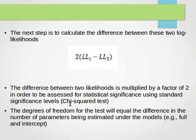That's in order to be assessed for statistical significance using the standard significance levels, maybe the chi-squared test again. In my tutorial, Data Exploration and Analysis, in there I explained how the chi-squared test works. The degrees of freedom for the test will equal the difference in the number of parameters being estimated under the models, maybe the full model and the intercept model. Unfortunately, I don't have an example here for things to make more sense, but hopefully things here are not too difficult to understand.